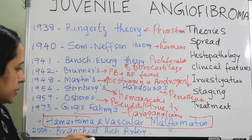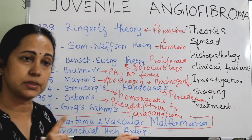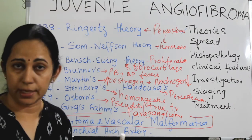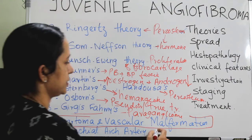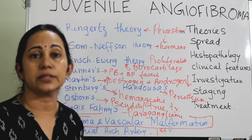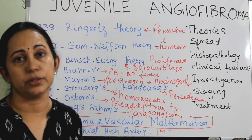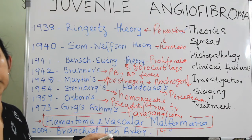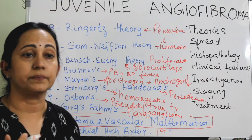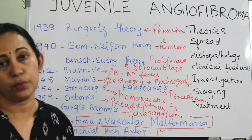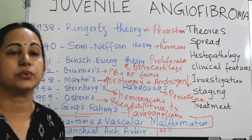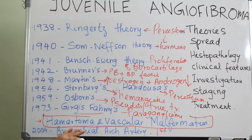In 2004, the branchial arch artery theory was proposed, suggesting that persistence of the first branchial arch artery is the cause of JNA. The first branchial arch artery is seen in relation to the sphenopalatine foramen and the pterygoid wedge. This is also an accepted theory, but the most accepted remains the hematoma and vascular malformation theory. This topic can be asked in postgraduate theory examinations.